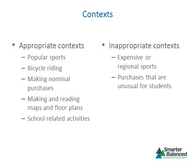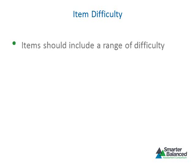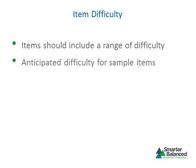A range of difficulty is necessary to discriminate between low and high performing students. Items and tasks should form a continuum from easy — those that most students could be expected to answer — to hard — those that only a few students could be expected to answer — with most items falling in the middle range of difficulty. An adaptive test requires items that span a full range of difficulty, so item writers need to include items they perceive as easy, medium, and hard. Each sample item in the specifications provides information about its anticipated difficulty level.